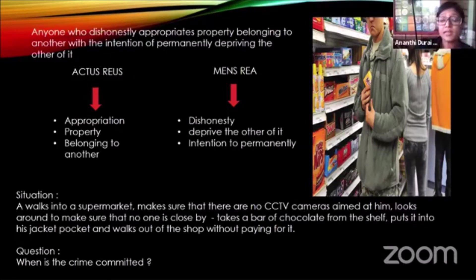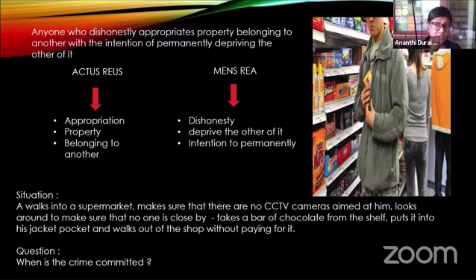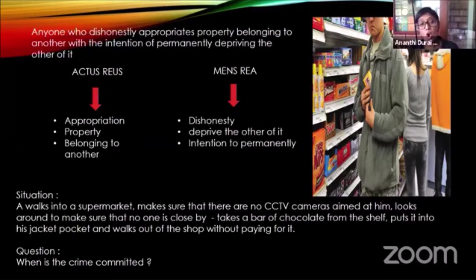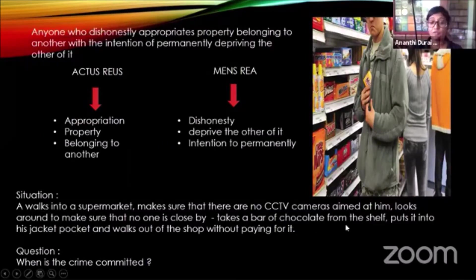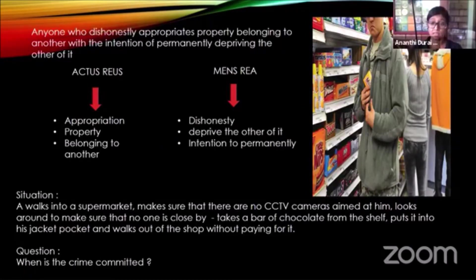Now my question — and this is what in the exam you would have to look at — is: when does he commit the offence of theft? There are two instances where this could be done: either at the point when he took the bar of chocolate and put it into his pocket, or at the point when he walked out of the shop without paying for it. As a student, you would be required to actually answer that question.